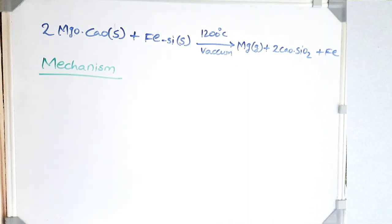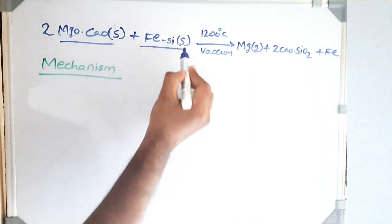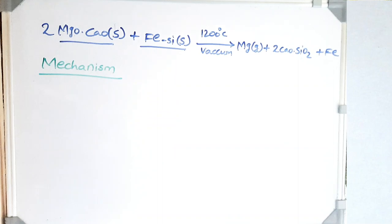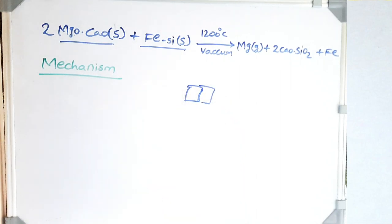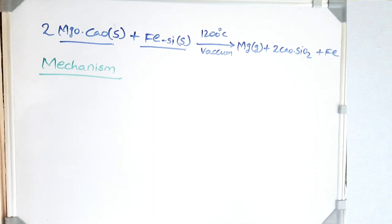If we look at the direct equation, both reactants are solids, so it is very difficult for the reaction to continue — the reaction only proceeds if both solid particles are in contact, which is very limited. This makes the production of magnesium very sluggish if the whole reaction takes place in the solid state. However, we get a better understanding if we look at the actual mechanism of how this reaction proceeds.